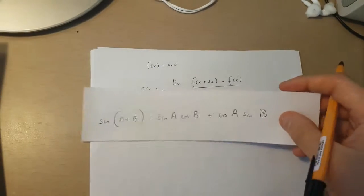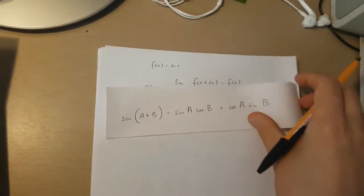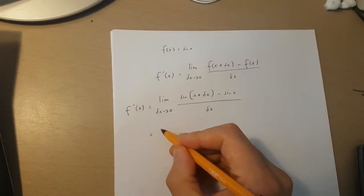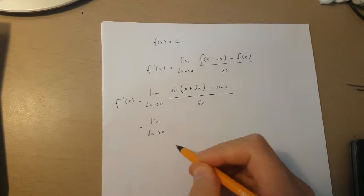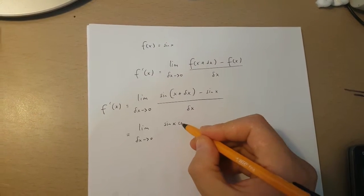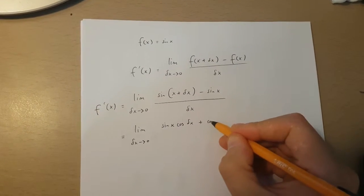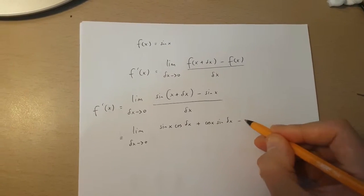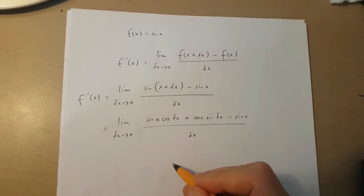Now, because of this formula over here, this is going to be equal to, in the limit, as change in x approaches 0, sine x cos change in x plus cos x sine change in x minus sine x, all over change in x.